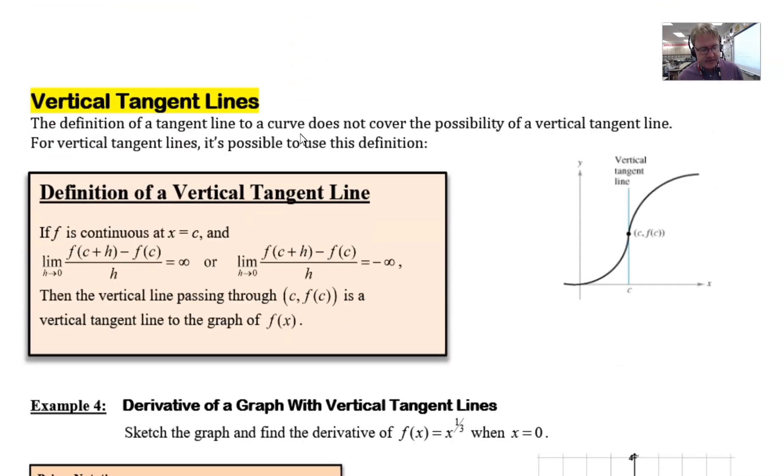If I scroll down here to the topic of our video today, vertical tangent lines, we see a statement that says the definition of a tangent line to a curve does not cover the possibility of a vertical tangent line. For vertical tangent lines, it's possible to alter that approach a little bit, and we have a completely different definition.